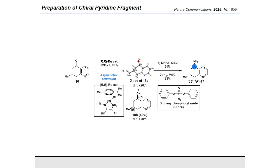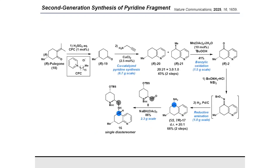Stereo-invertive azide displacement of the resulting alcohol under Mitsunobu conditions and subsequent hydrogenation gave the desired optically pure amine. Although the desired chiral amine was obtained, separating the two diastereomers in the asymmetric reduction step was highly challenging, indicating this route would not be suitable for large-scale reaction.